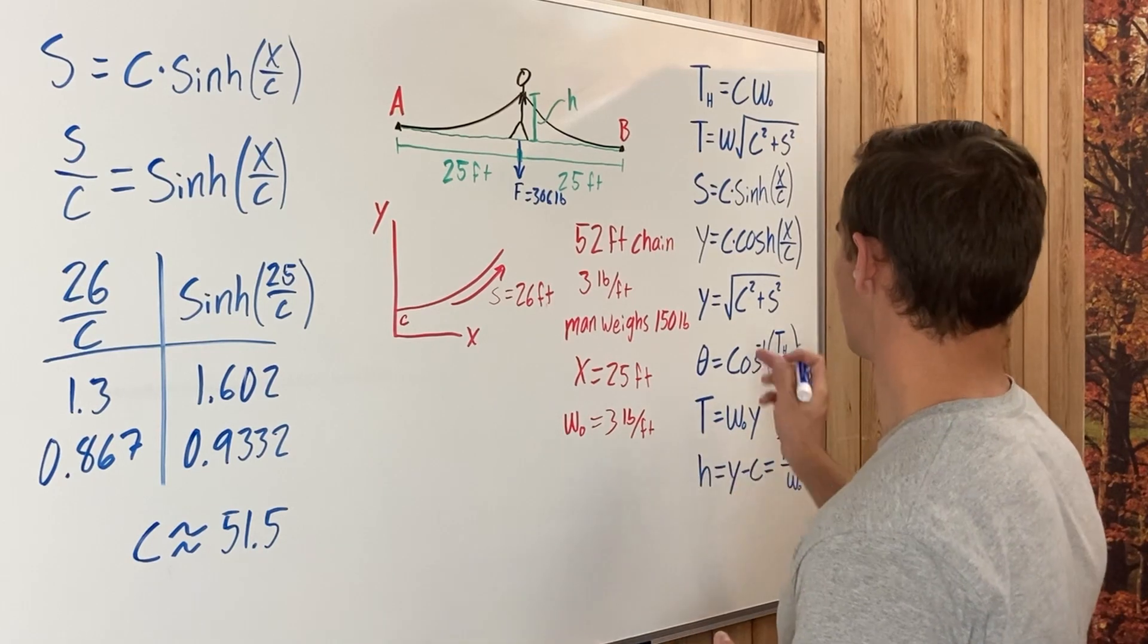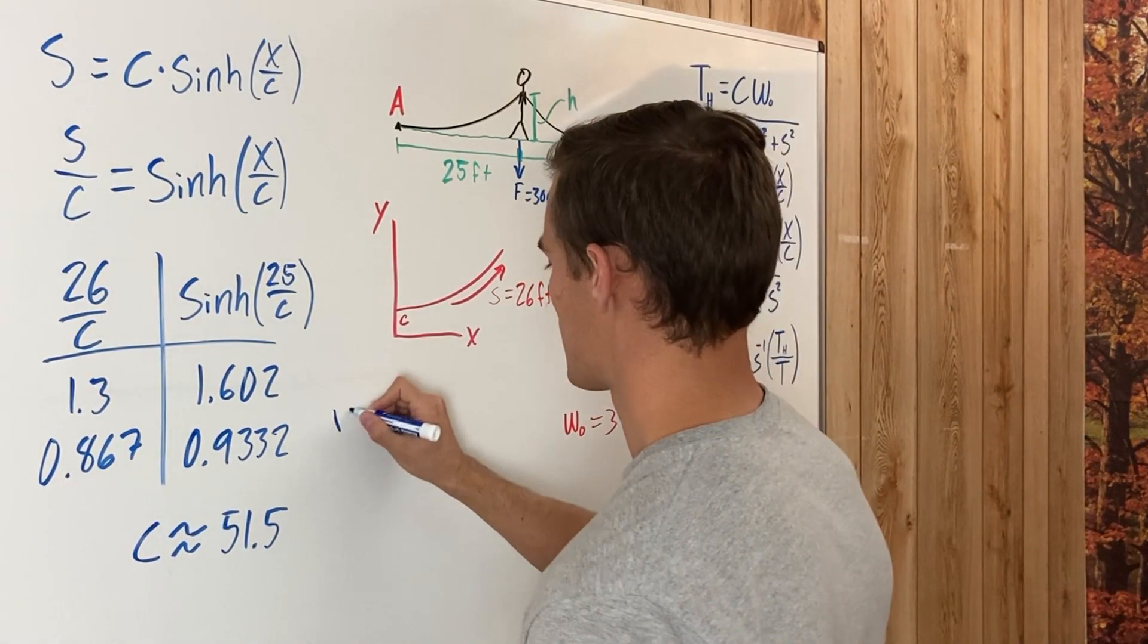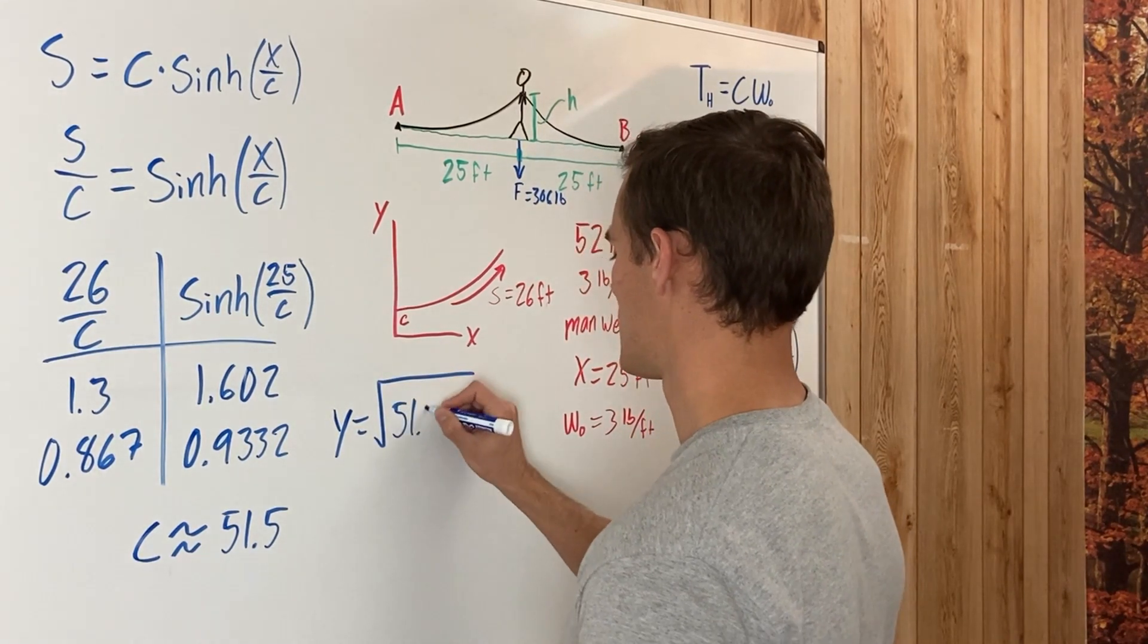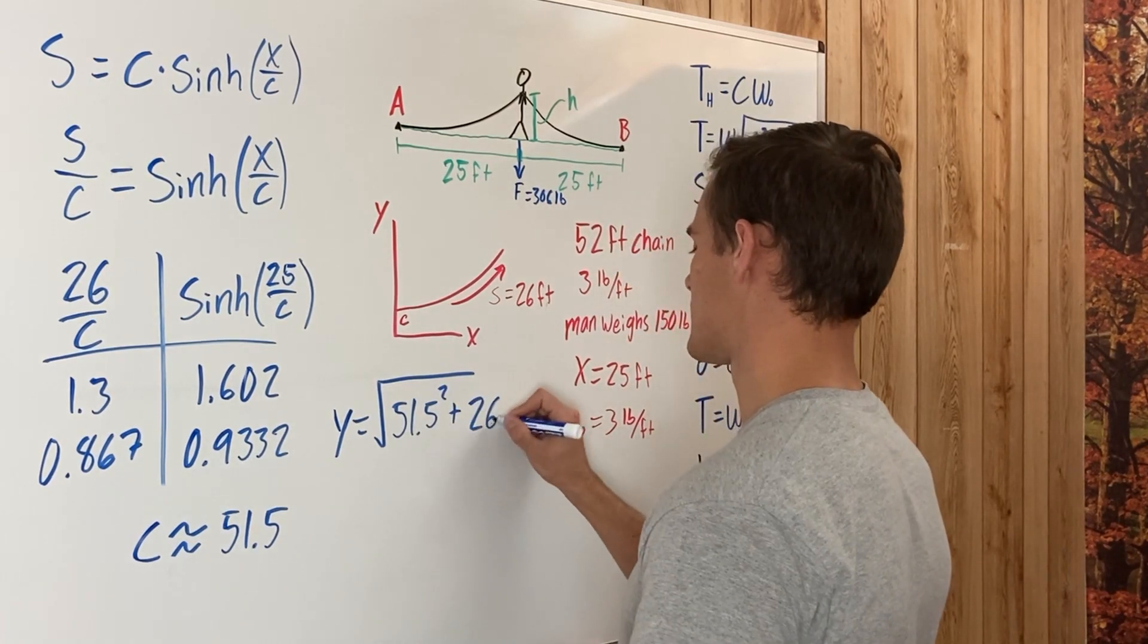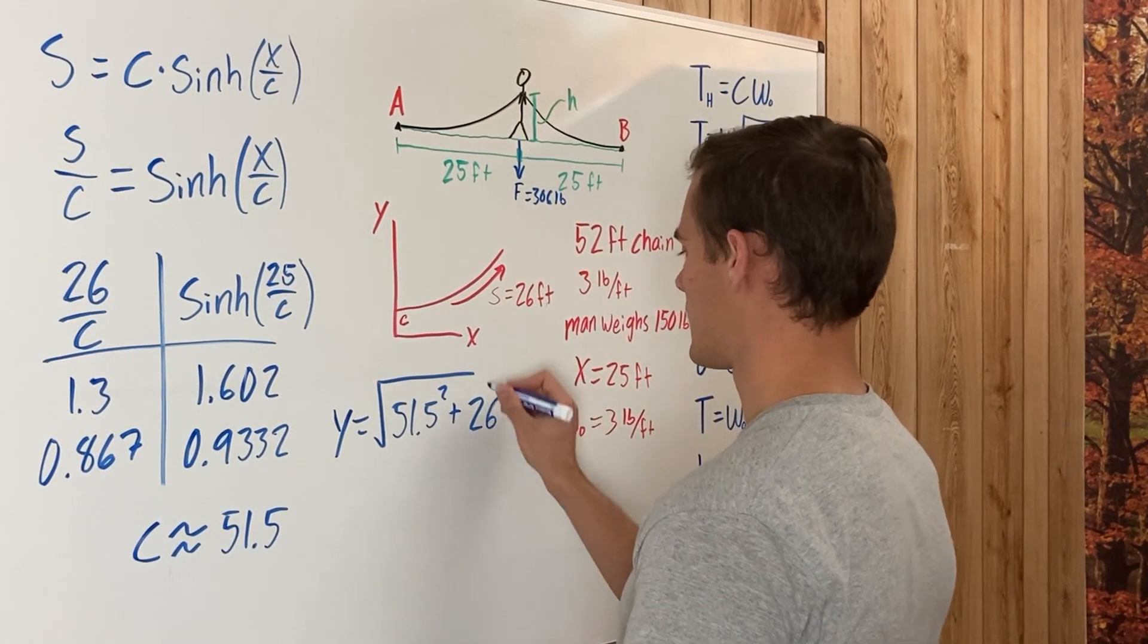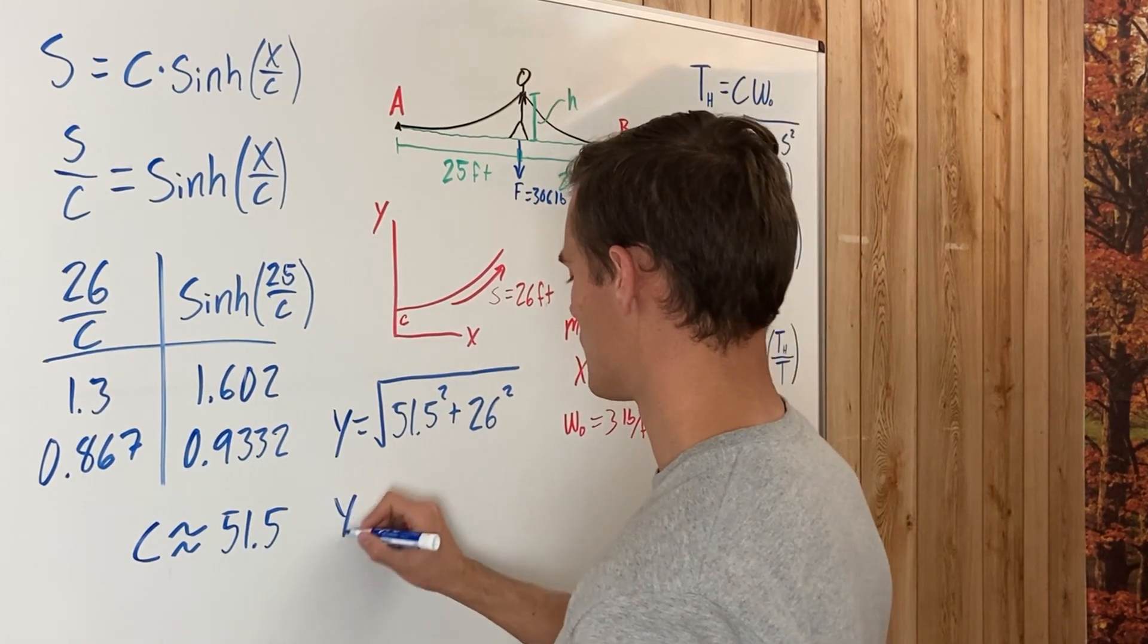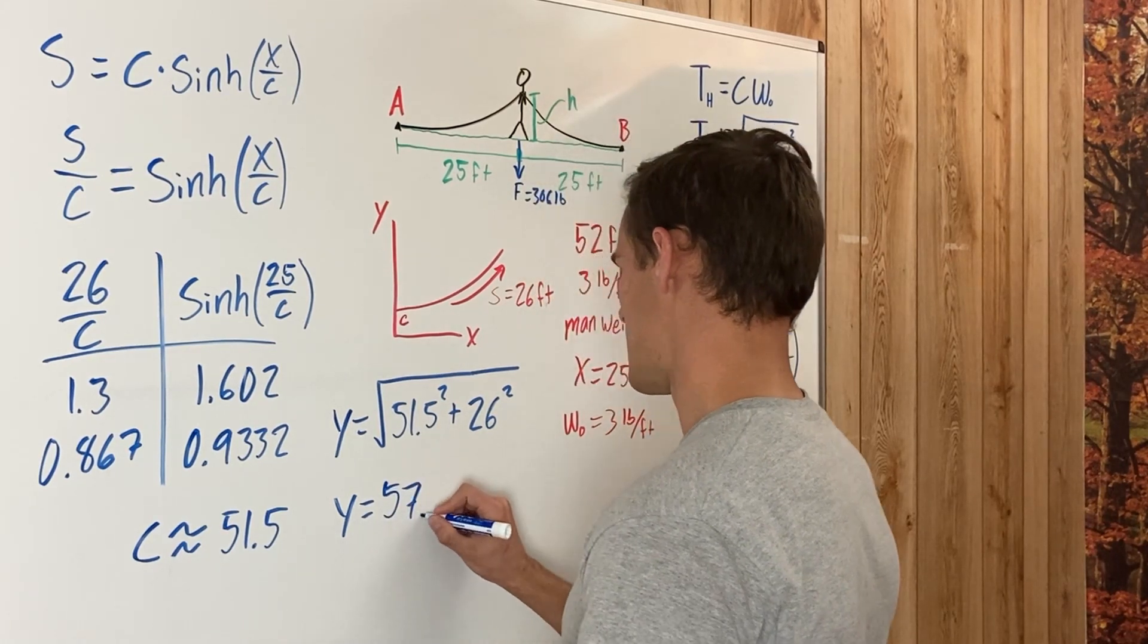So this is C, approximately. And then we can plug into this equation to find y. We have that y equals the square root of C squared, which is 51.5 squared, plus x squared, which is 25 squared. So we get that y equals 57.69 feet.